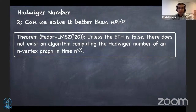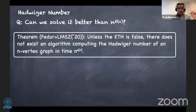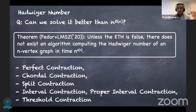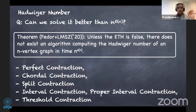In this year's ICALP paper, Fomin et al. proved that unless ETH is false, there is no algorithm that can compute the Hadwiger number on an n-vertex graph in time n^{o(n)}, showing the simple brute-force cannot be improved very significantly in the exponent unless ETH fails. They also presented a robust reduction which can be modified to prove similar results for perfect contraction, chordal contraction, and split contraction — showing there is no n^{o(n)} algorithm for these problems on n-vertex graphs.